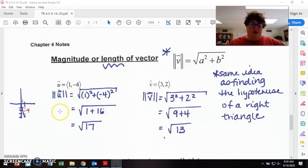So for this first one, one squared plus negative four squared. So you get your magnitude to be the square root of 17. And then vector V is three, two. And so substitute in a squared plus b squared, the square root of that, and you get the square root of 13.